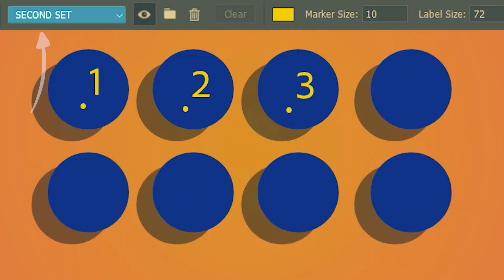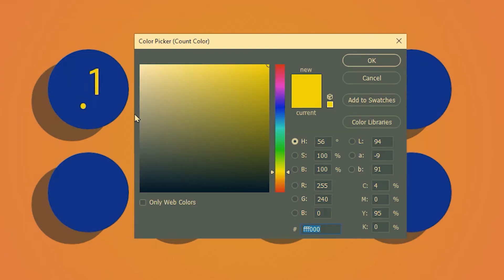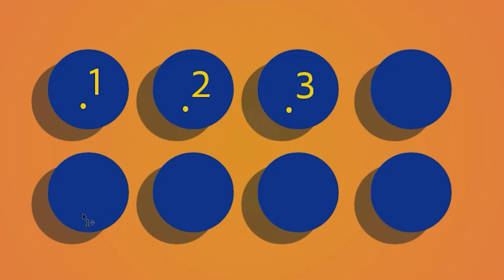I want to change the color of this group just to differentiate them. Then I'm going to go ahead and drop the numbers on each of these three circles. You can notice that since this is a new group it has started counting from 1 and not from 4.